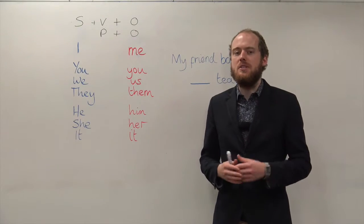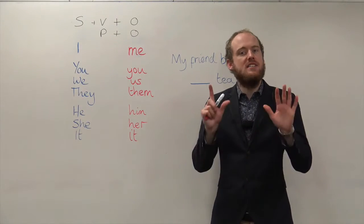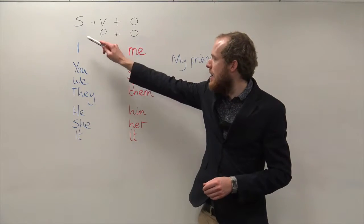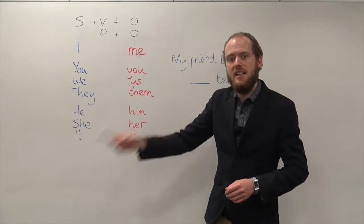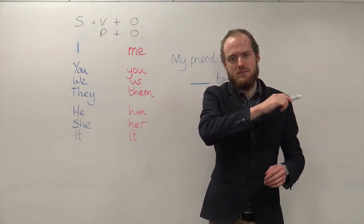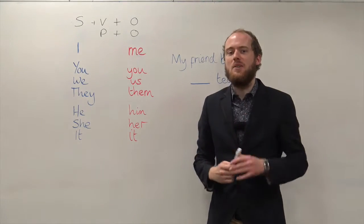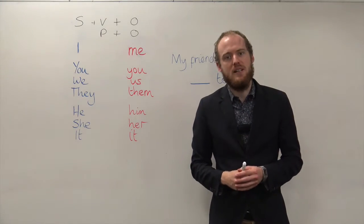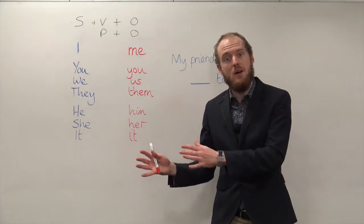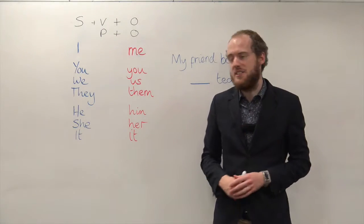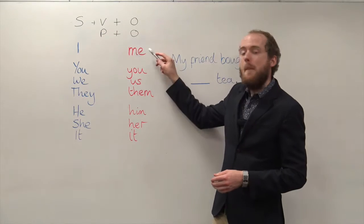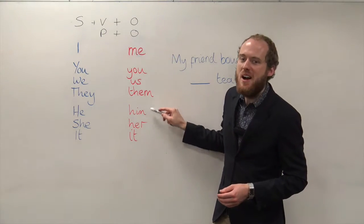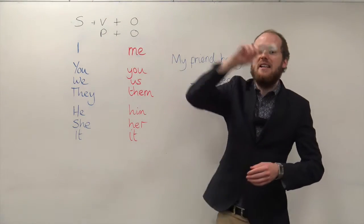Remember, there are seven subject pronouns: I, you, we, they, he, she, it. And of course, there are seven object pronouns that correspond to each subject pronoun: me, you, us, them, him, her, its.